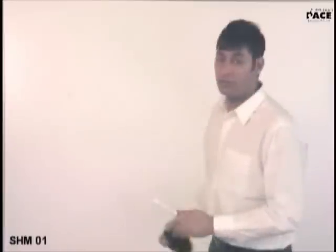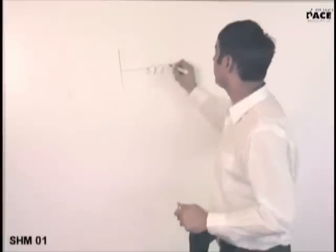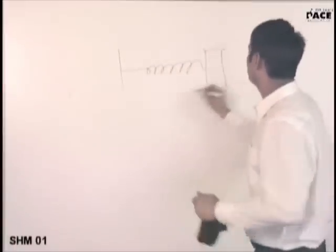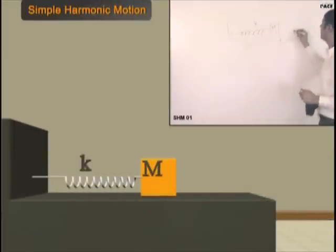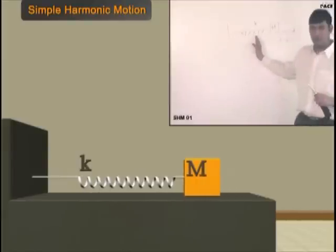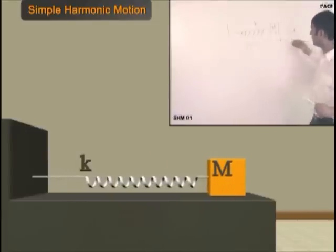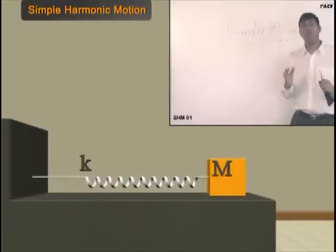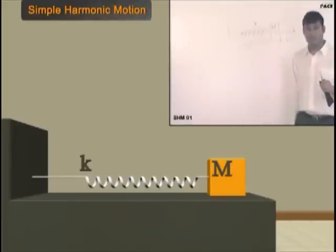What is harmonic motion? To and fro motion. If you have a spring with a mass on a frictionless surface — if you displace it from its equilibrium position and leave it, what will it do? It will try to come back to its original position. And because of inertia, the velocity at the equilibrium position carries it past, so it oscillates to and fro. Any to and fro motion in which the body retraces its path is called harmonic motion.